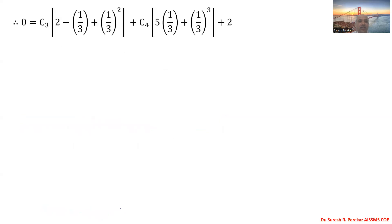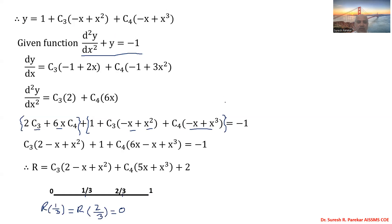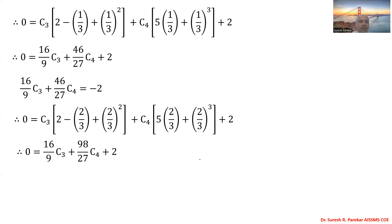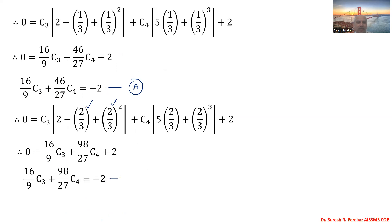Substituting x = 1/3 into the residue and setting R = 0: c3·(2 - 1/3 + 1/9) + c4·(5/3 + 1/27) + 2 = 0, which gives 0 = (16/9)·c3 + (46/27)·c4 + 2 — this is equation (a). Substituting x = 2/3 into the residue and setting R = 0 gives equation (b).